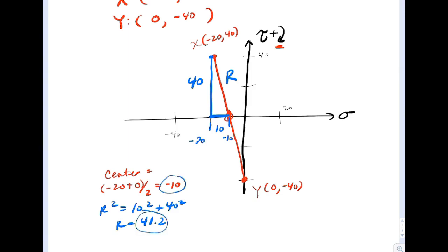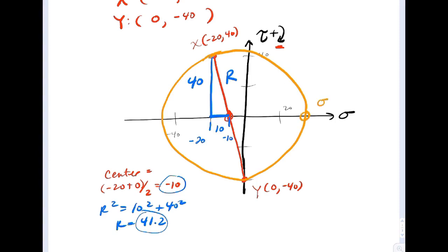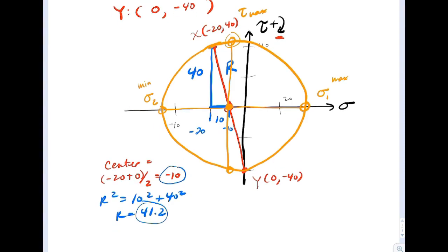I've got the center and I've got R, so I can calculate the principal stresses and max shear stress graphically. We take that initial state of stress and strike all the way around the circle. To the far right is sigma 1 (sigma max); to the left is sigma 2 (sigma min) — it's the center plus radius and center minus radius. At the top and bottom we have tau max, which equals the radius of the circle, 41.2. At tau max, all normal stresses equal the value at the center of the circle, minus 10.